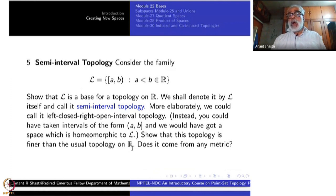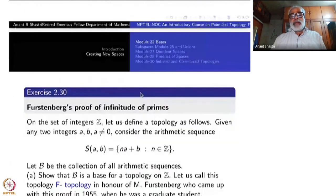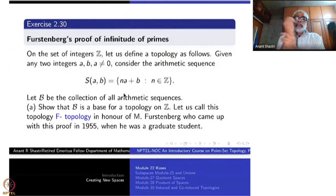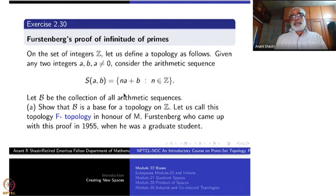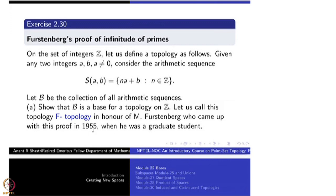Here is another interesting example. On the set of integers, we define a topology as an entertaining application of elementary topology to prove a very ancient theorem in number theory. This is due to Furstenberg, who was just a graduate student when he published this in 1955. Let S(a, b) denote the arithmetic sequence {na + b : n in Z} for a not equal to 0. Let B be the collection of all such arithmetic sequences.